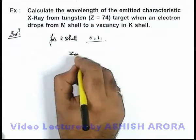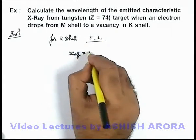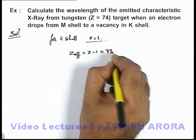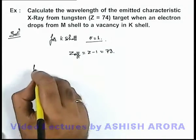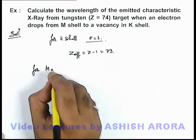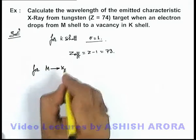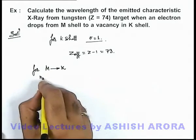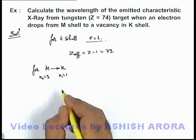So here the effective atomic number will become Z minus 1, which will be 73. And for an electron transition from M shell to K shell, here n2 will be 3 and n1 is equal to 1.